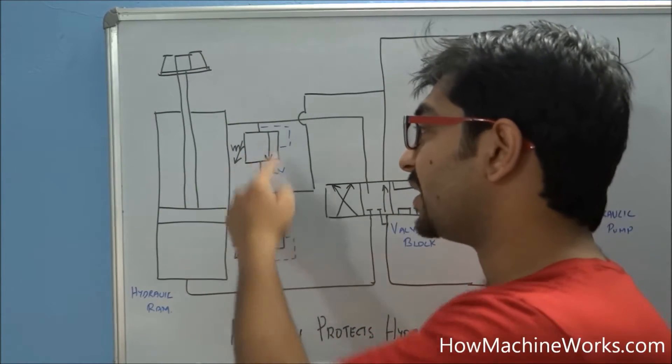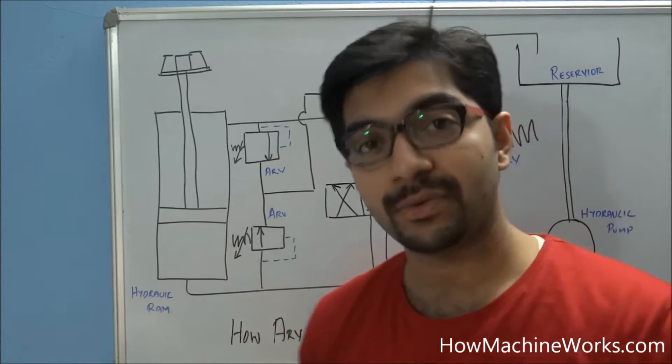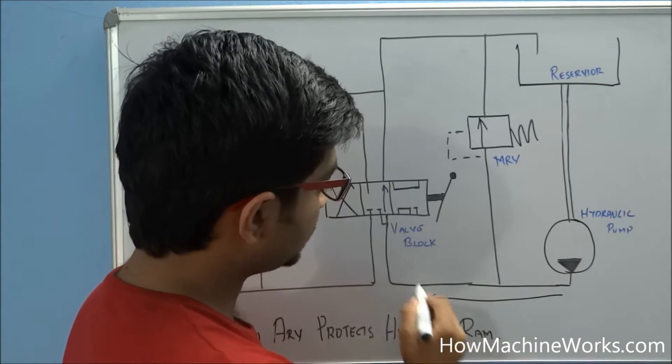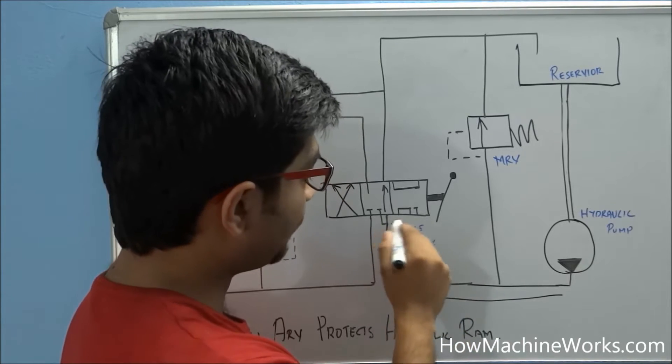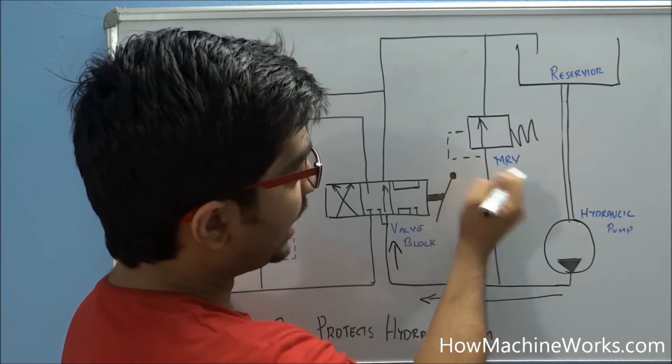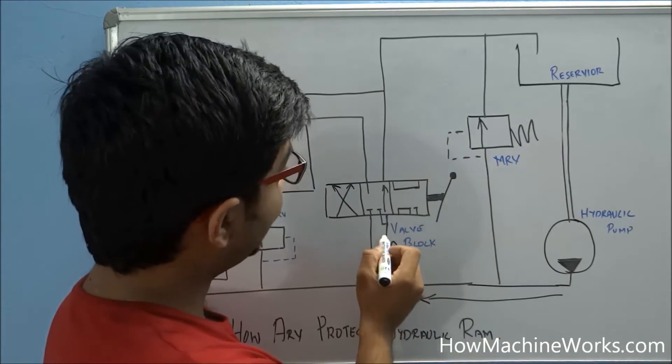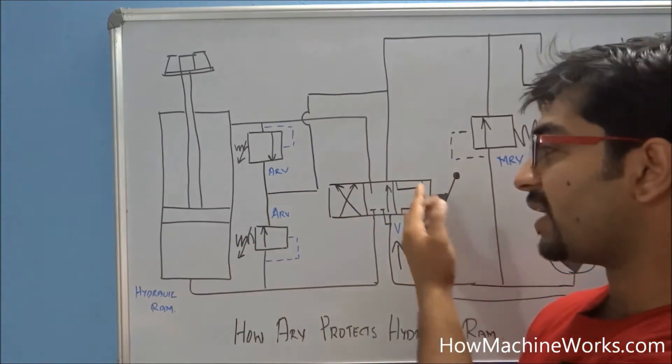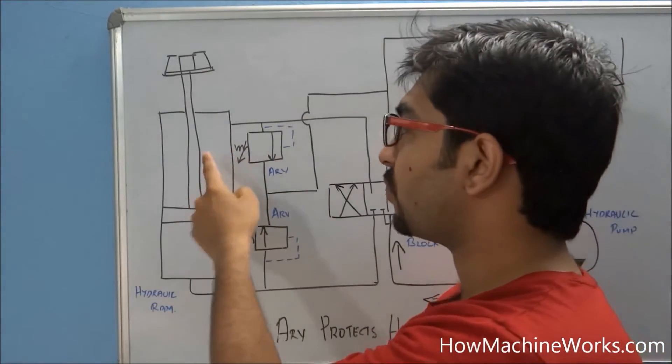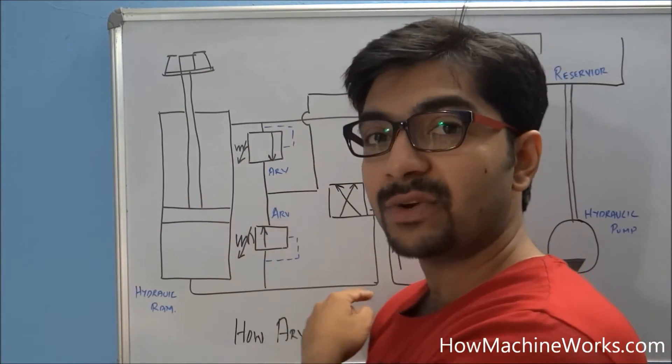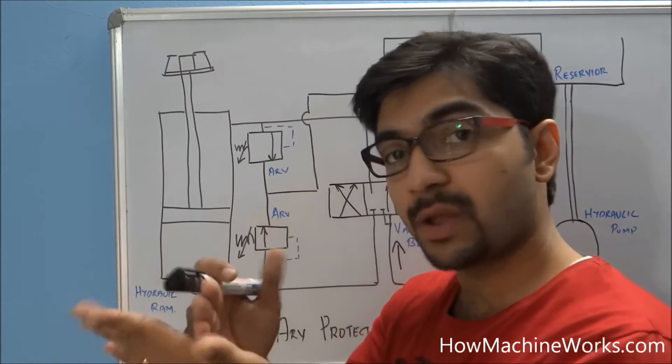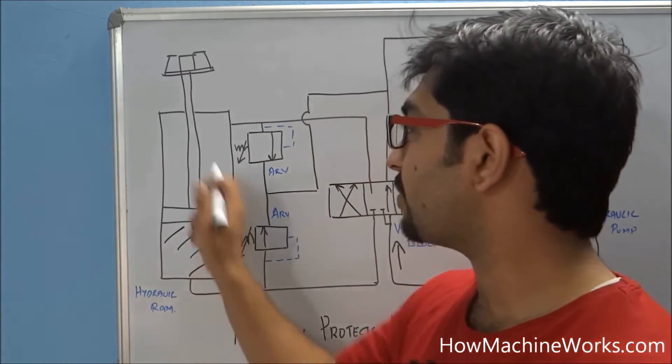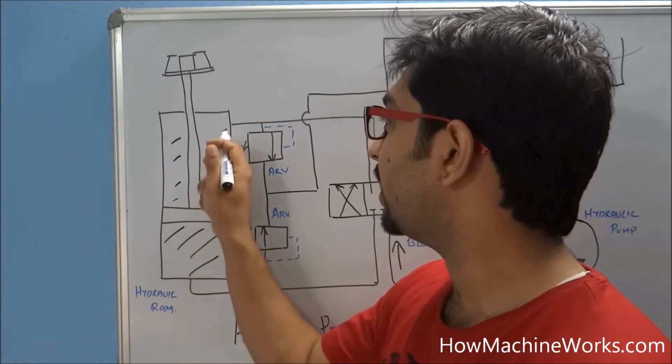Now let's see how the auxiliary relief valve protects the hydraulic cylinder. When the pump functions, the flow goes in this direction and reaches the valve block. As we move the valve block lever, the flow will get routed towards the hydraulic cylinder. We have selected the direction control valve into neutral, so there is no flow going back towards the hydraulic tank. That means the return line is closed. We have oil in the head side of the cylinder and also in the rod side of the cylinder.